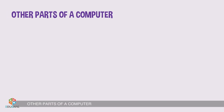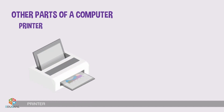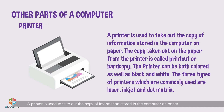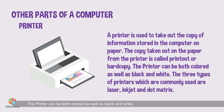Other Parts of a Computer: Printer. A printer is used to take out the copy of information stored in the computer on paper. The copy taken out on paper from the printer is called a printout or hard copy. The printout can be both colored as well as black and white. The three types of printers commonly used are laser, inkjet, and dot matrix.